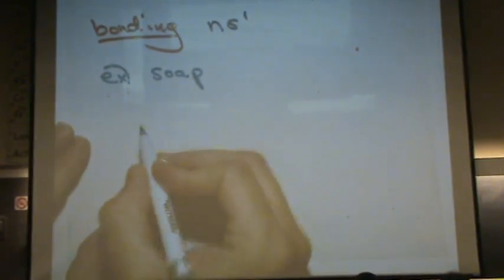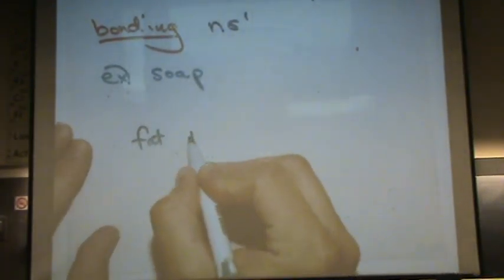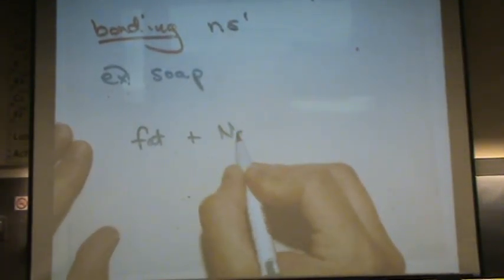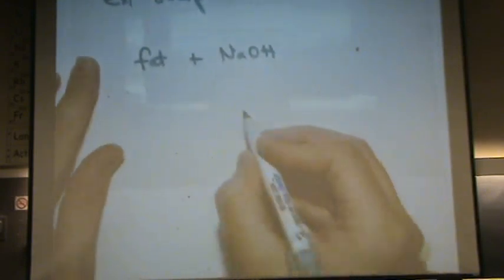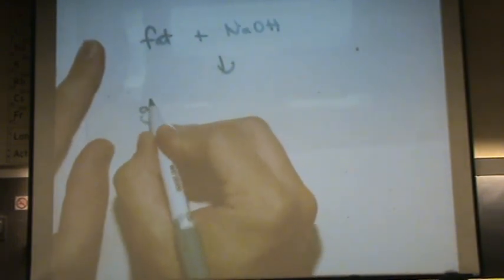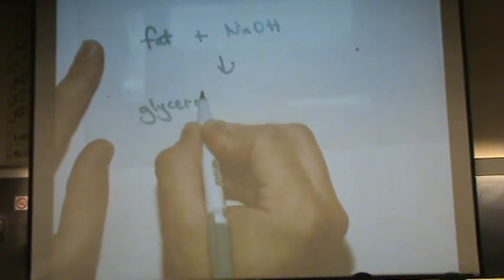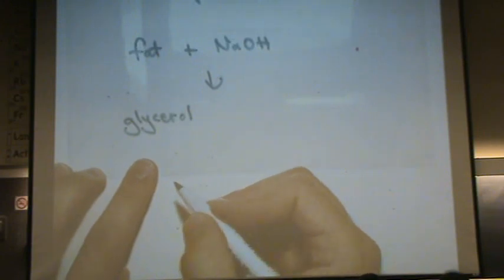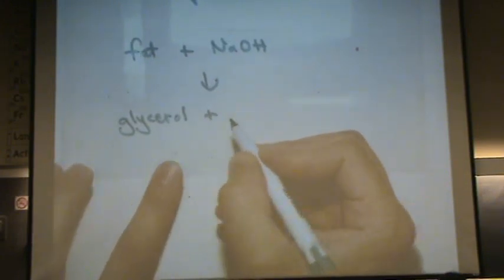So, fat plus the sodium hydroxide will make glycerol, which is also an explosive, or it can be changed into explosive, and crude soap.